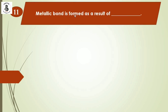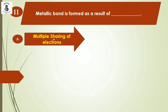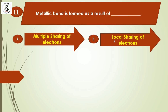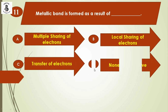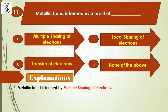Next question: A metallic bond is formed as a result of — option A: multiple sharing of electrons; option B: local sharing of electrons; option C: transfer of electrons; option D: none of the above. The metallic bond is formed by the multiple sharing of electrons. So option A is the right answer.